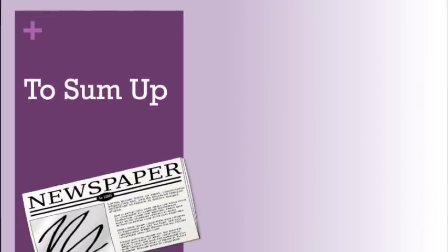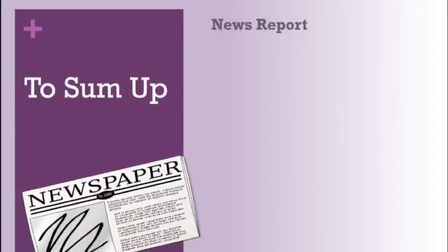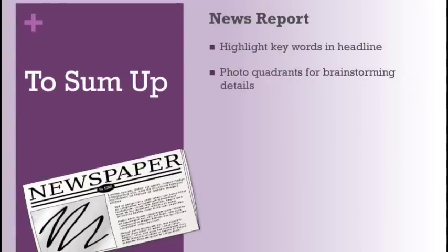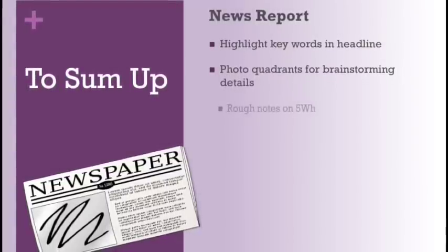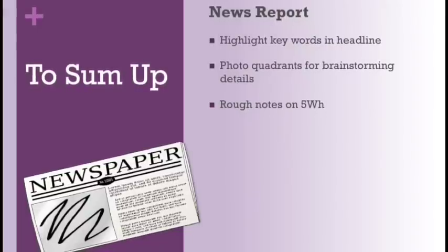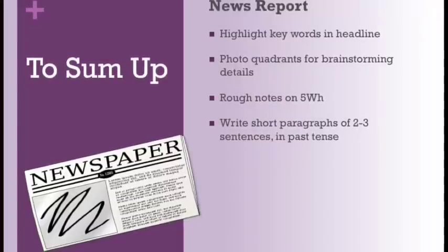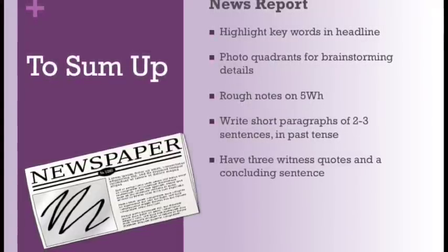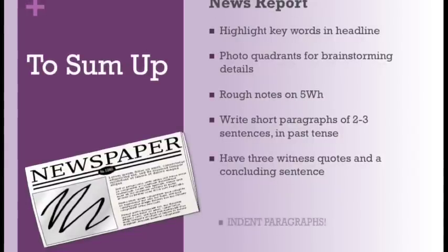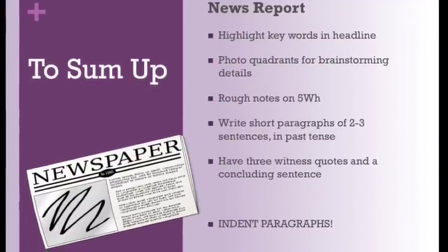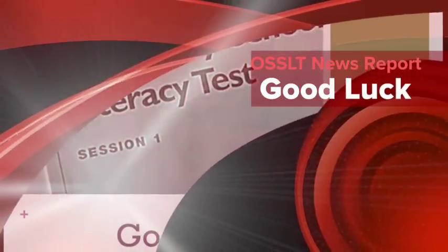To summarize, the way to be successful on the news report for the literacy test is to begin by highlighting the keywords in the headline. Then divide your photo into quadrants and brainstorm any details there. Use the rough notes section to brainstorm additional information for the five WHs — studies show that students who use the rough notes section are more successful. Use short paragraphs of two to three sentences, always stay in past tense, have three witness quotes, and end with a concluding sentence — don't end your article with a quote. Always indent all your paragraphs. The best way to be successful is to keep practicing these skills at home, online, or in after-school classes. Good luck!